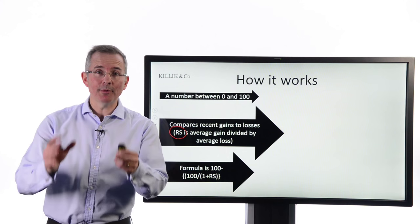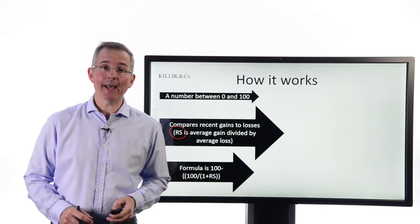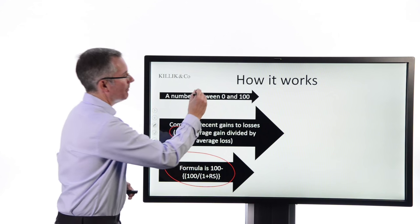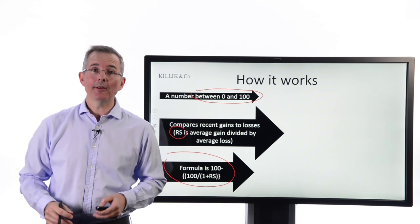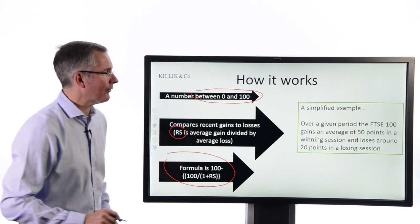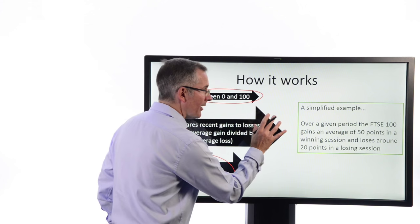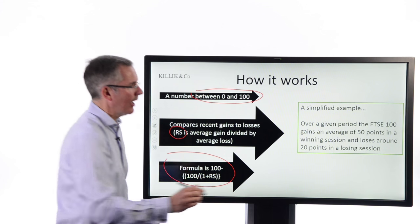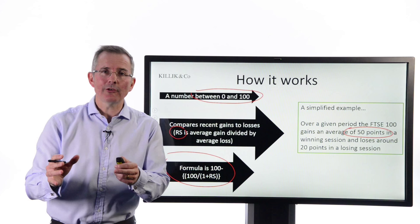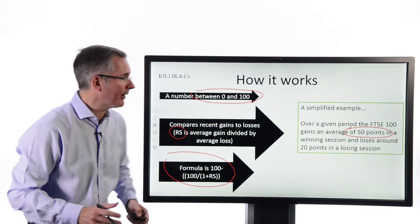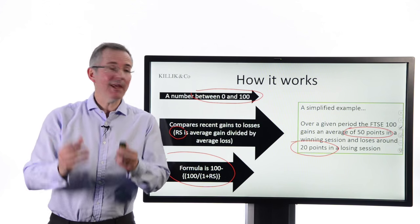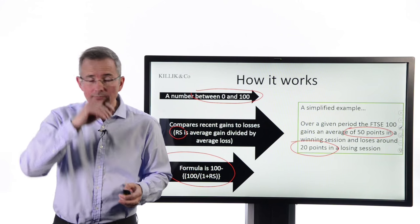And this is where some people might turn off but don't, because actually I'm going to cut through this fairly quickly to the end result. So let's take a look at how I might apply this formula to come up with my number between 1 and 100. And then how would I interpret the result? So here it is. A simplified example. And for purists, this is a little bit simplified, but who cares for the purposes of a basic education video. Over a given period, the FTSE 100 gains an average of 50 points in a winning session. That's clear assumptions I'm making here. And loses around 20 points. So on an up tick, it goes up around 50. On a down tick, it goes down 20. Okay.